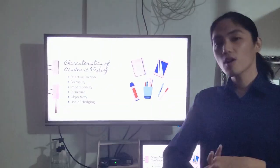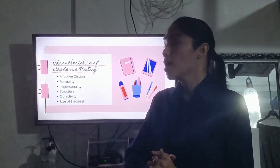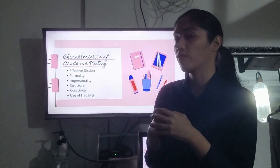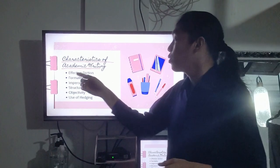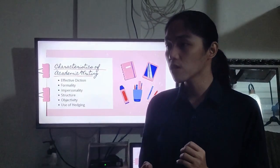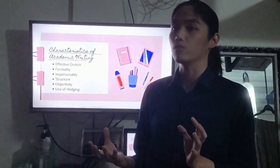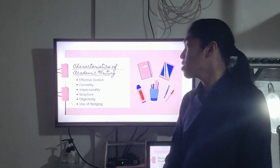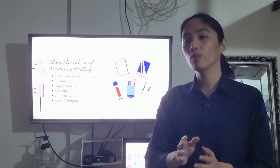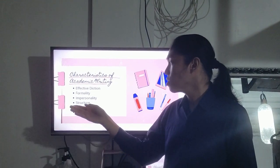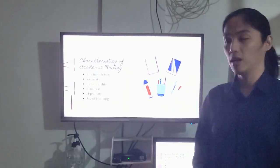The characteristics of academic writing include: number one, effective diction — you need to have effective diction when creating academic writing. Number two is formality — academic writing is a professional format. The language used is English, since English is a medium of instruction. The remaining characteristics are impersonality, structure, objectivity, and the use of hedging.